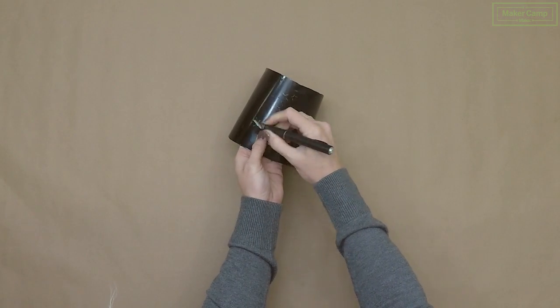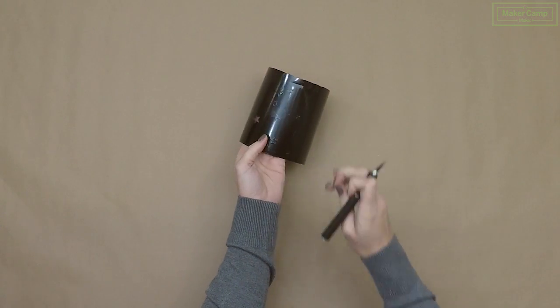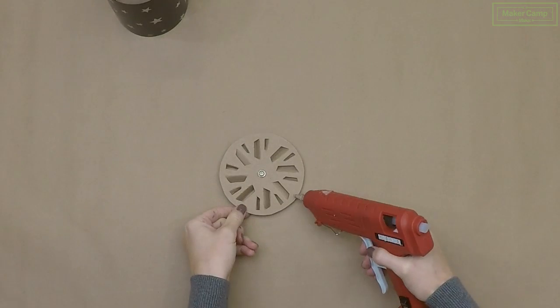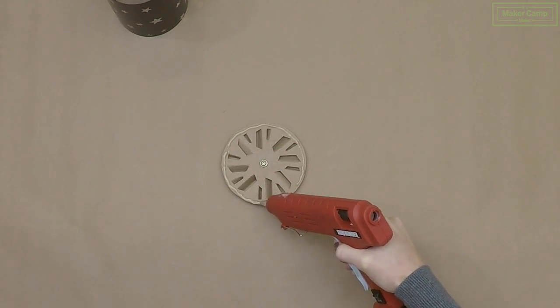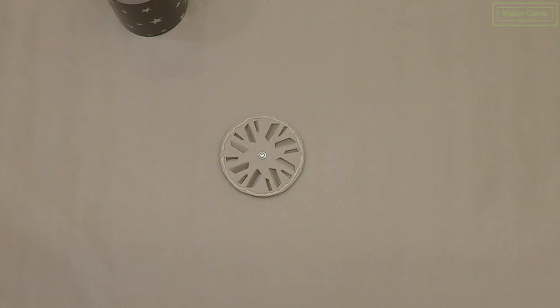Now our inner cylinder is dry so we're going to pick off our star stickers carefully using our craft knife. And using a low temperature hot glue gun, we'll attach our inner cylinder to our chipboard turbine.